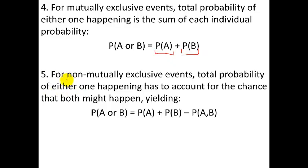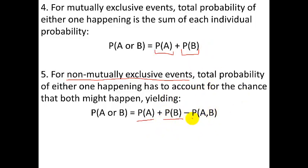For non-mutually exclusive events, which means they could both happen, the total probability of either one happening has to account for the chance they might both happen. First you add them together, but because they might both happen there could be some overlap, so you subtract the probability that they both happened to get the probability of just one or the other.